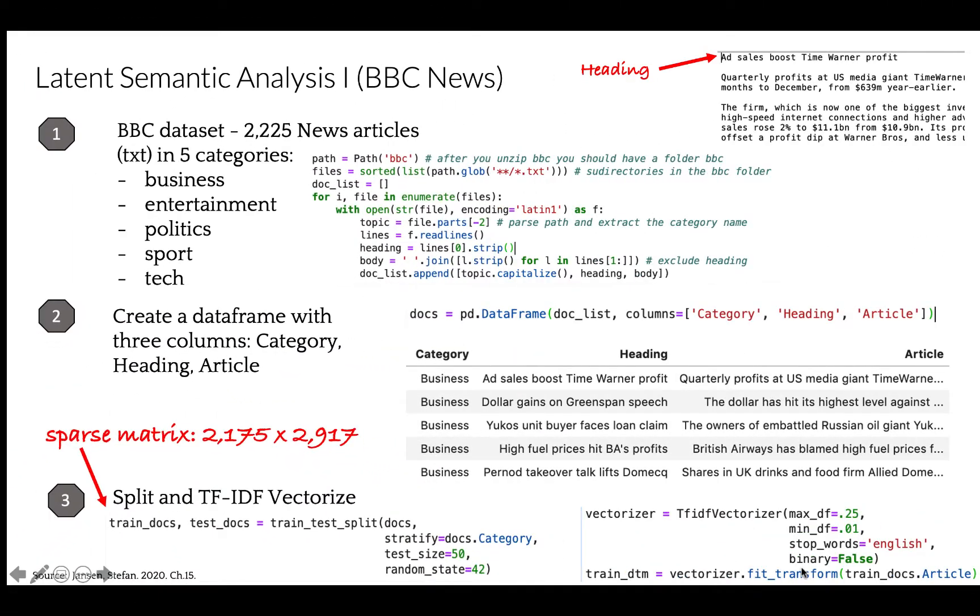To illustrate the application for LSI, we will be using the BBC articles data provided by Stefan Jensen in his book Machine Learning for Algorithmic Trading. This dataset comes with 2,225 news articles in five categories: business, entertainment, politics, sports, and tech. And we will create a data frame with three columns: category, heading, and article.